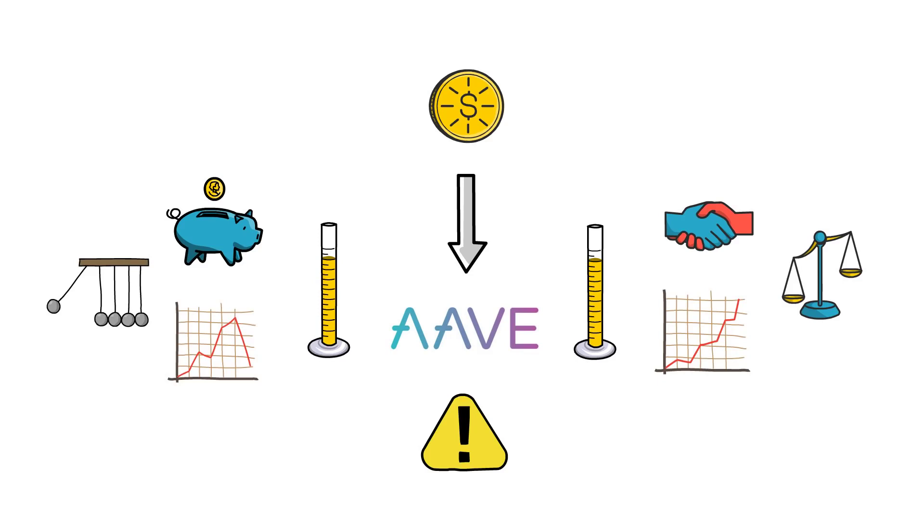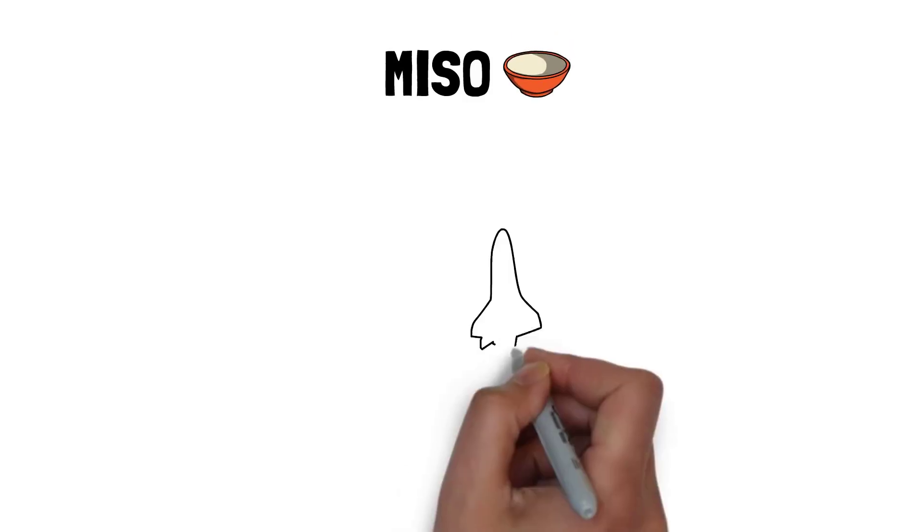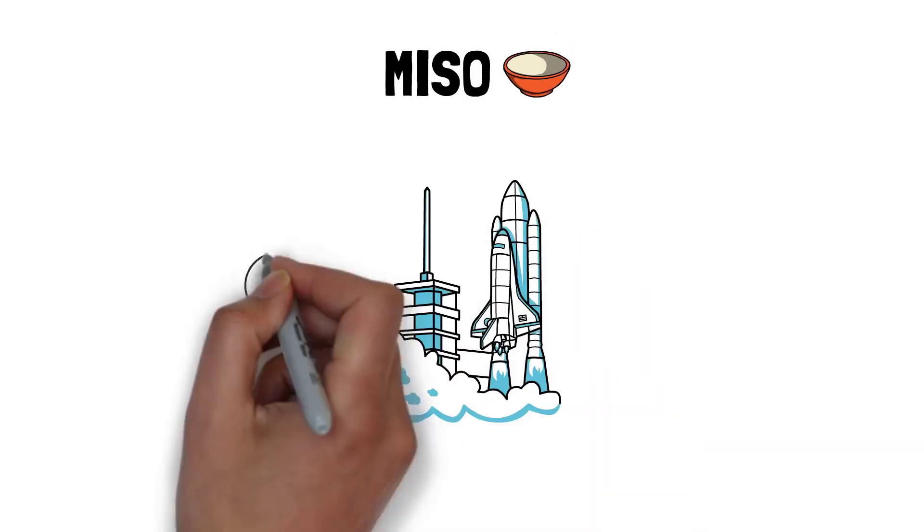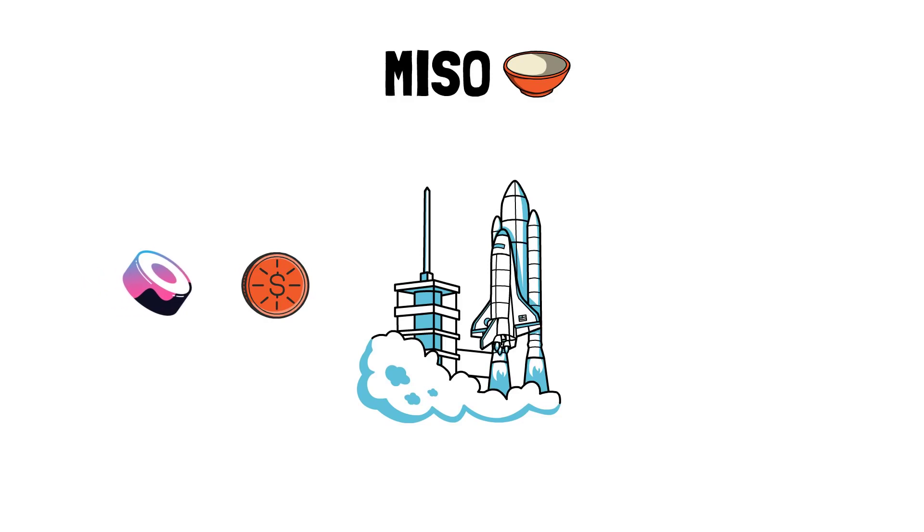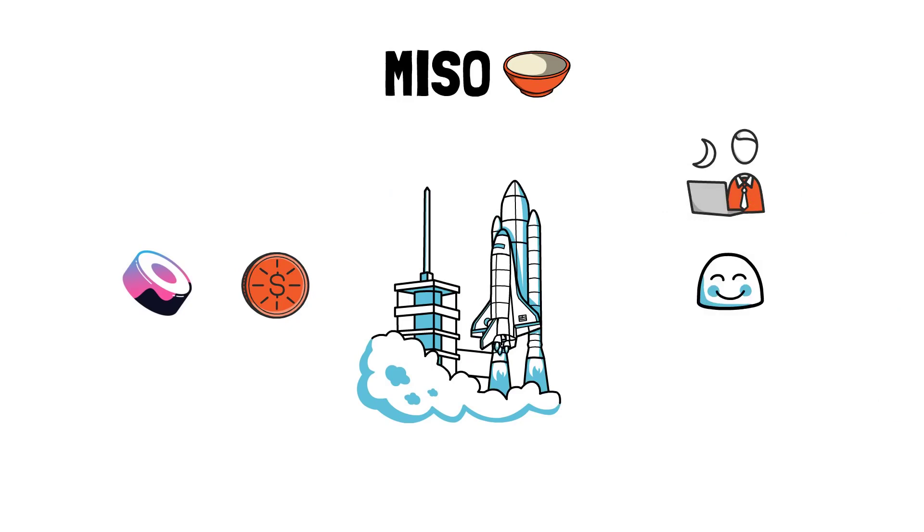The last but not least feature of Sushi that we're going to cover in this video is Miso. Miso is a token launchpad platform. It facilitates launching new tokens on Sushi. Miso focuses on providing a good experience for both the project creators launching new tokens and for people interested in finding and supporting these projects.